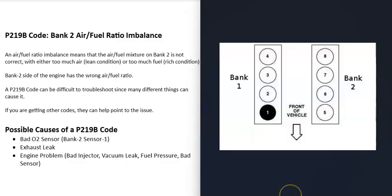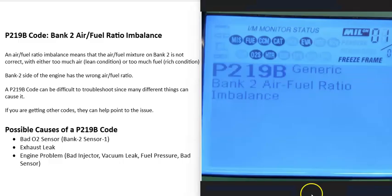When you have a V6 or V8 engine, the engine has two banks. Bank 1 is always the side of the engine with the number one cylinder. If you Google your engine's cylinder location or firing order and locate the number one cylinder, that side is bank 1, and the opposite side is bank 2.